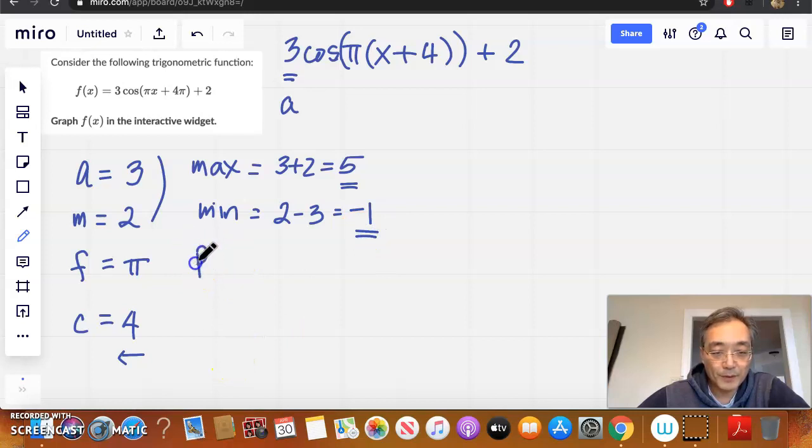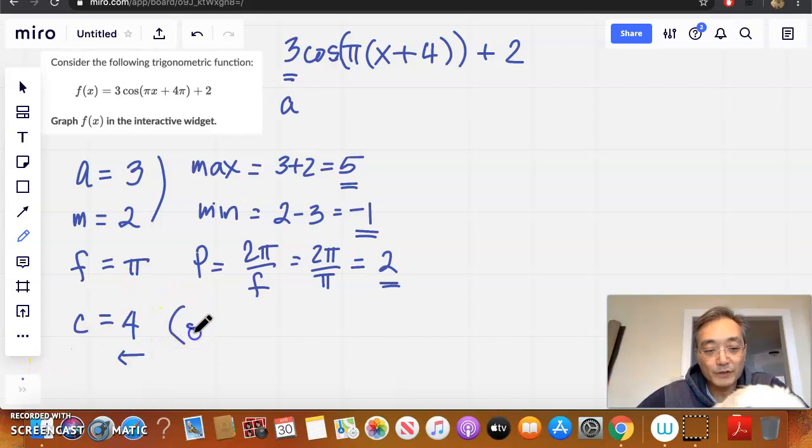Now let's find the period. Period is 2π over the frequency. So it's 2π over π, which gives us 2. And then, of course, our phase shift is, once we have all this, now we've got to shift this function 4 units to the left. So it's shifted left 4 units. So I think we have enough information here to actually graph it.